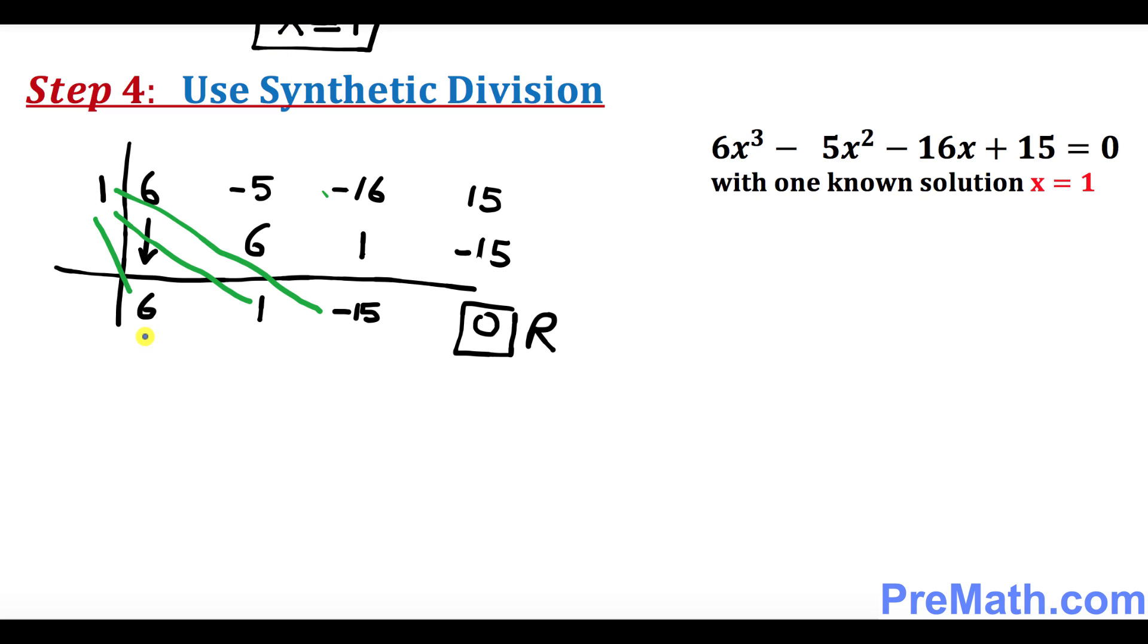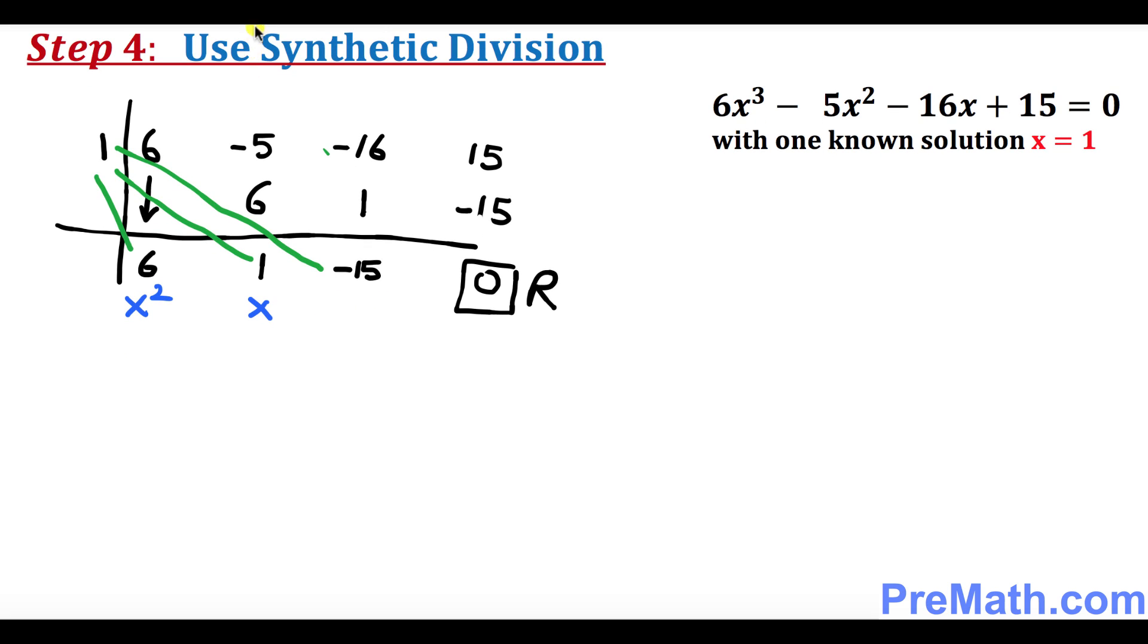So now this 6 is going to be with the x power 2. This is going to be with the x and this negative 15 is going to be without x, which is called constant. So we finally got 6x squared plus 1x minus 15 equal to 0.